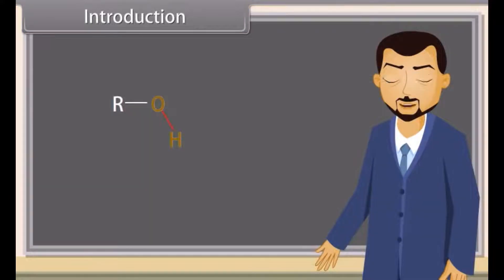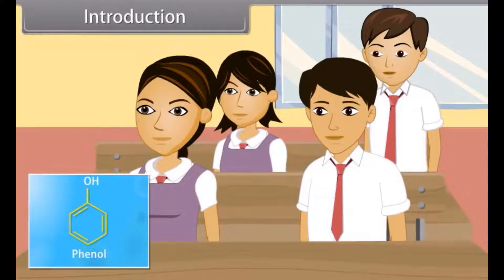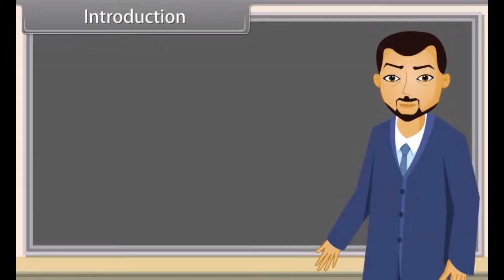The hydroxyl group is a functional group consisting of a hydrogen atom covalently bonded to an oxygen atom. Can anybody tell me what is phenol? Yes, teacher. Phenol is an organic compound where one hydrogen attached to a benzene ring is replaced by a hydroxyl group. Very good, Sunil. In this lesson we will learn about alcohols, phenols and ethers.